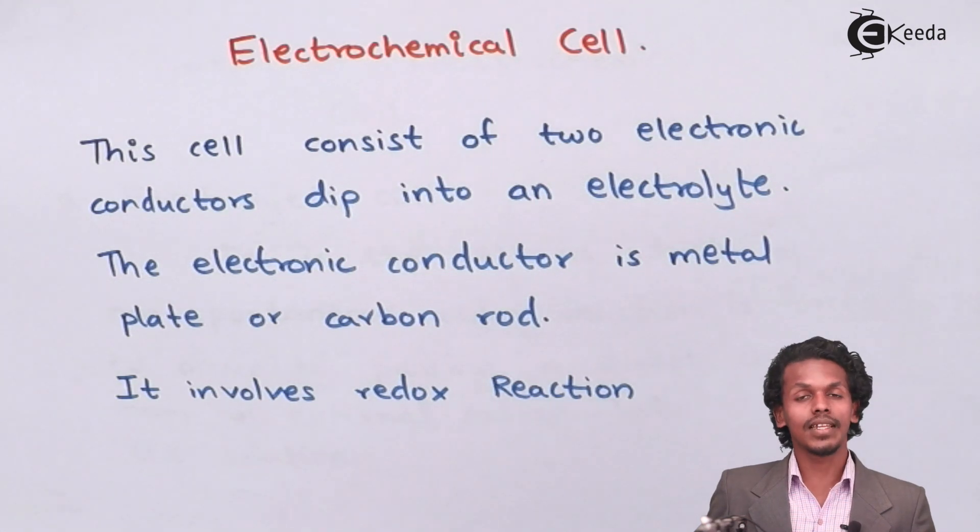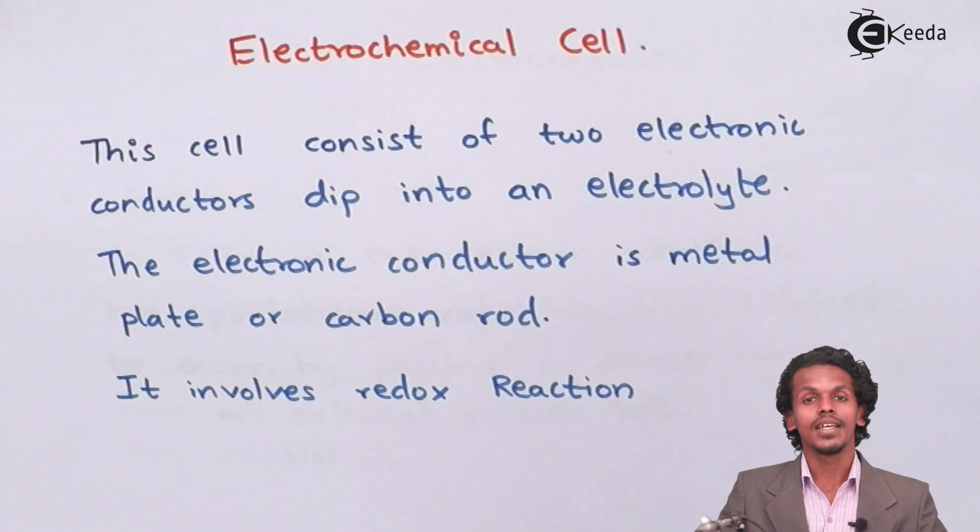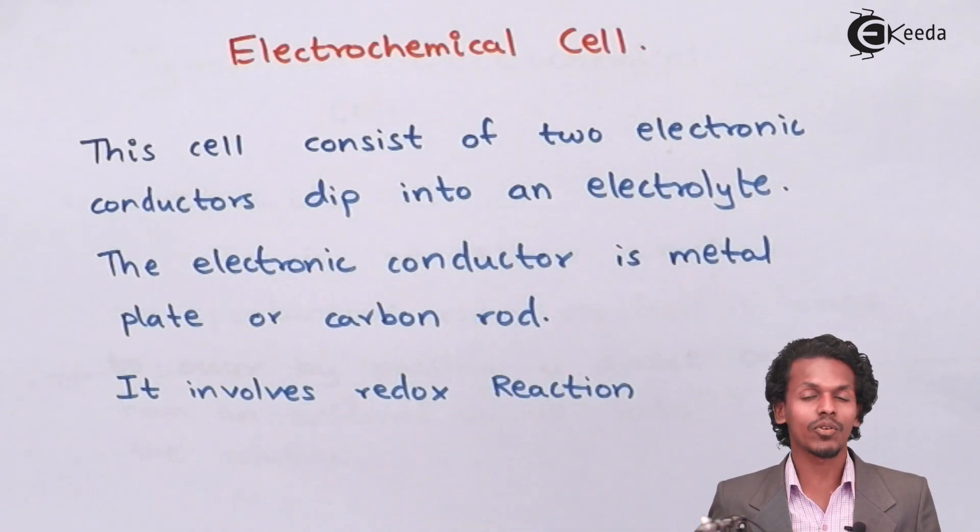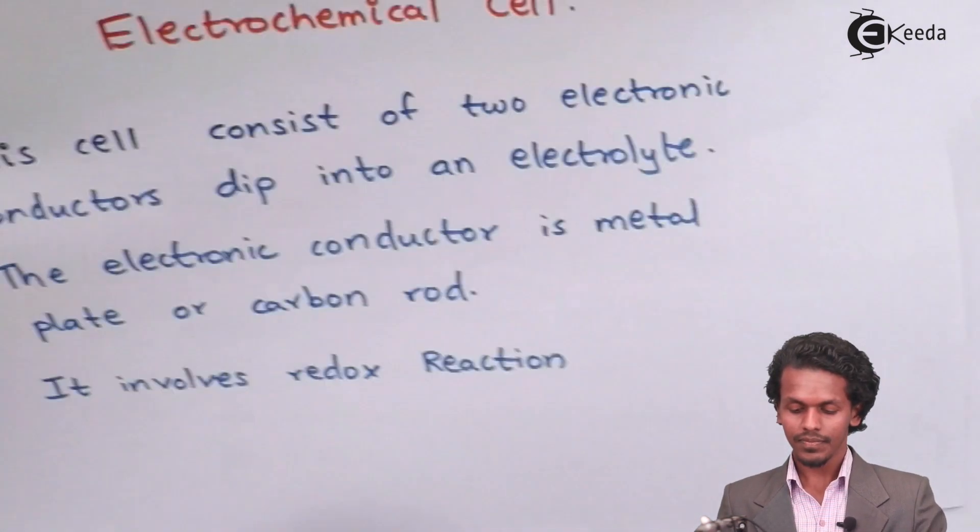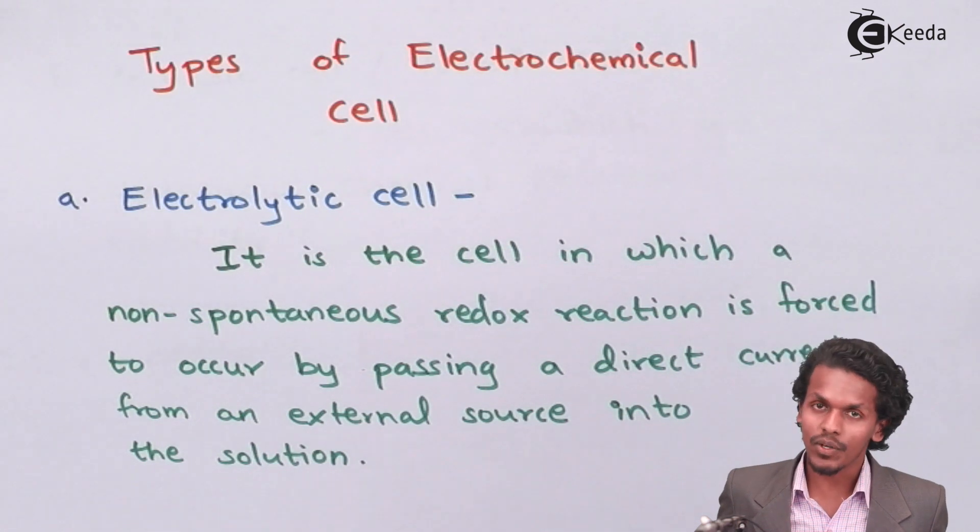So based on these two theories and based on these two reactions, the overall phenomenon of these electrochemical cells are divided into two parts. That is we are now talking about the types of electrochemical cells.